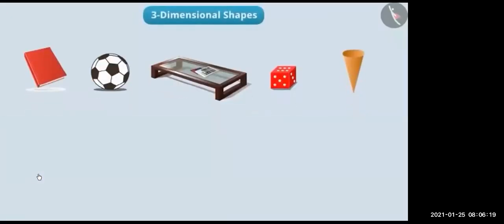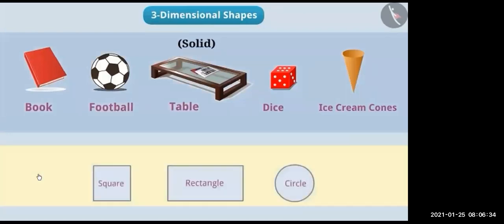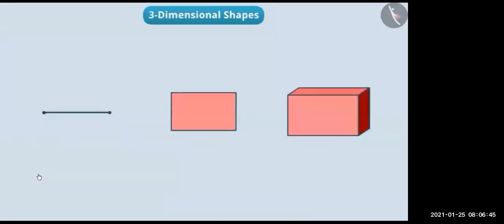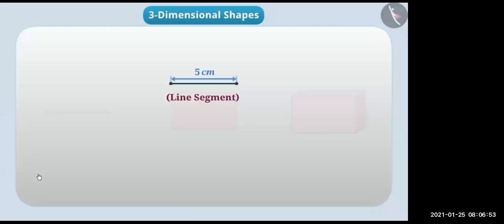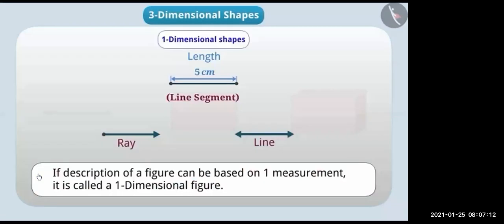In our daily lives we see different things such as books, footballs, tables, dice, ice cream cones, etc. All these shapes are solid — they are not flat like rectangles or circles. We call them three-dimensional shapes. To understand them: the first figure is a line segment of length five centimeters, described on the basis of only one measurement. A figure described by just one measurement is called a one-dimensional figure. A ray or line is also one-dimensional.